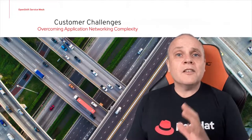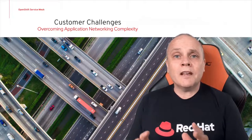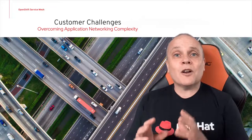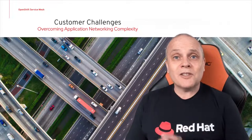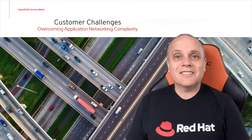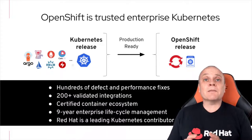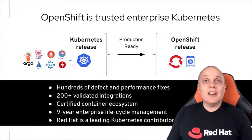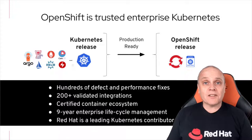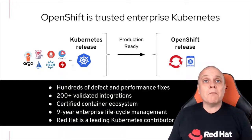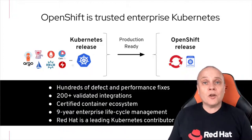To add some context, I'll now take you on a short overview of our Kubernetes-based Red Hat OpenShift platform and describe how OpenShift Service Mesh, based on Istio, fits into it. At Red Hat, we use an open-source development model to deliver our enterprise products. Our secret source is in our ability to turn many open-source projects into production-ready, stable, and secure enterprise products that we support over many years.